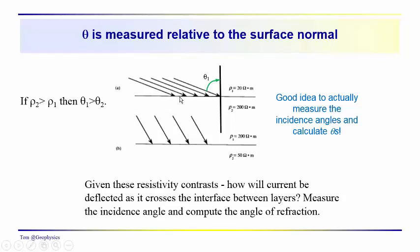If you had a problem like this, I'd suggest that you actually measure these angles and calculate the θs using this relationship: ρ1 tan θ1 equals ρ2 tan θ2. We know that this θ2 is going to be smaller. ρ2 is greater, θ2 is smaller. Over here, ρ1 is greater, ρ2 is smaller, so θ2 is going to be larger.